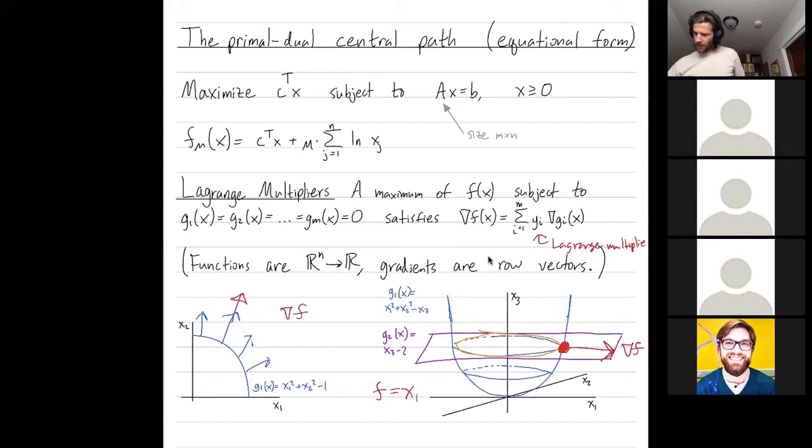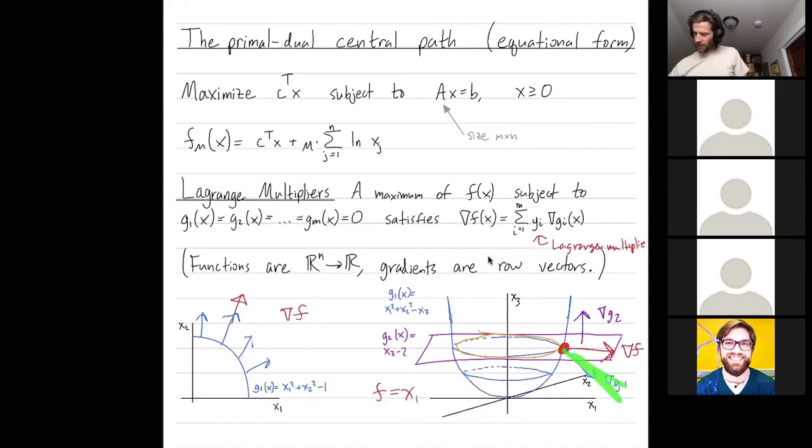So the gradient of g1 at that point points down in the x3 direction. I have this negative x3. So the gradient of g1 has this component negative one in the third entry. What about the gradient of g2? The gradient of g2 just points straight up in the third direction. So you can see now how I could balance these forces. I could add some multiple of the blue vector, the gradient of g1, to some multiple of the purple vector, the gradient of g2, to get the red vector, the gradient of f.